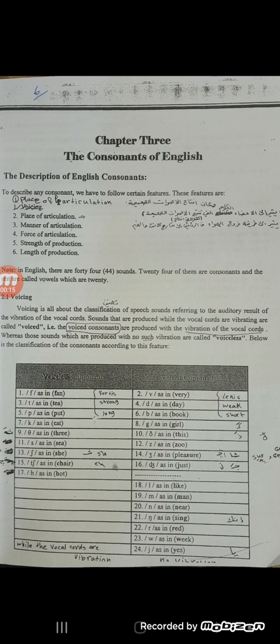As we mentioned before, we have 44 sounds in English, and we can divide these 44 sounds into two groups. We have 20 vowel sounds and 24 consonant sounds. So today I'm going to talk about the consonant sounds, we will focus on the consonant sounds.